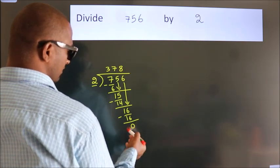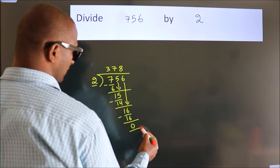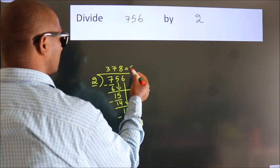After this, no more numbers to bring down, so we stop here. This is our remainder, and this is our quotient.